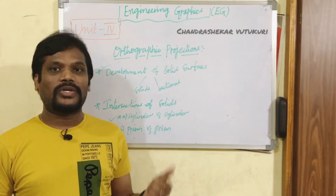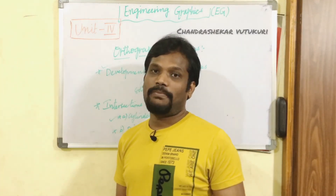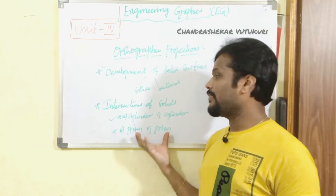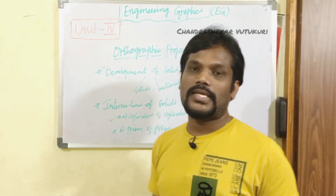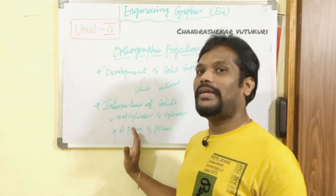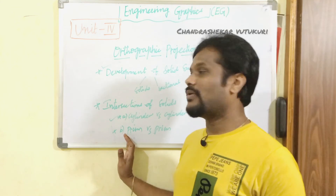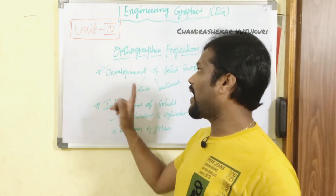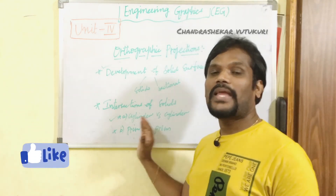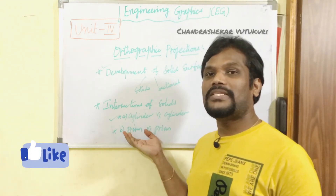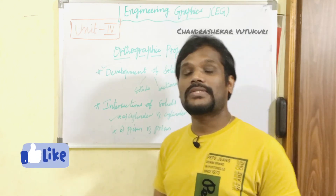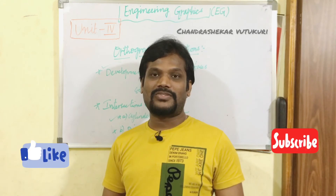If the intersections topic is not asked, for sure the developments will be asked. The intersections have been skipped in many years, but I am expecting the intersections question this year. It is all about cylinder versus cylinder and prism versus prism. The problems may be lengthy and time-consuming, but they are very easy to work out even for students without strong fundamentals, because it only involves the cylinder and the prism — most often the square prism versus square prism.